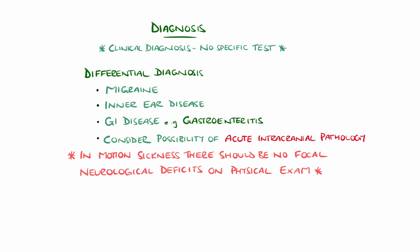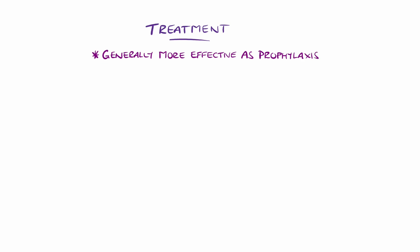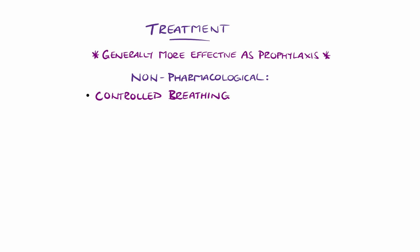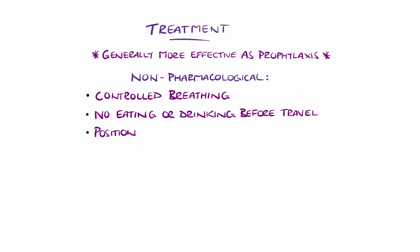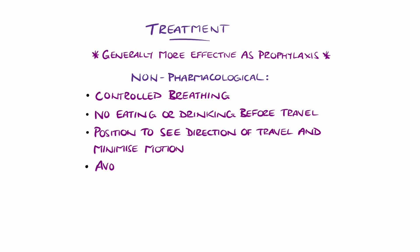In general, treatment is more effective when used prophylactically, as symptoms are more challenging to control once they have started. Non-pharmacological measures include controlled breathing, which helps reduce anxiety, not eating or drinking excessively or drinking alcohol before travelling, being positioned so the person can see the direction of travel or where motion is minimised, avoiding the use of devices or reading during travel, and ensuring fresh air.